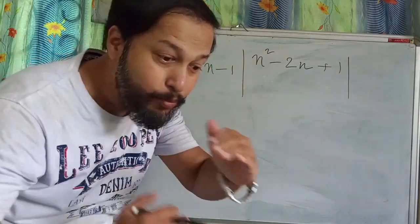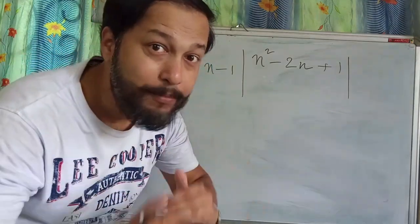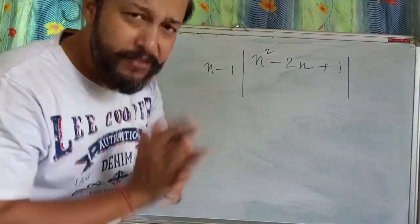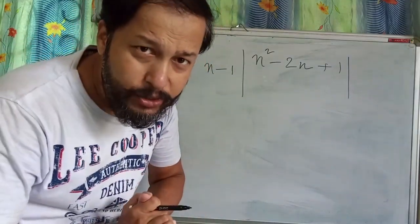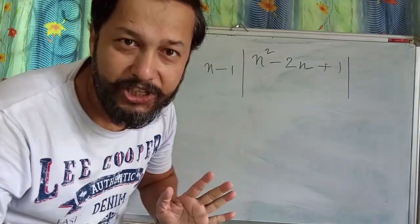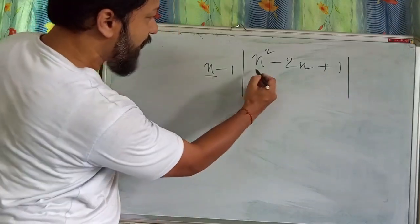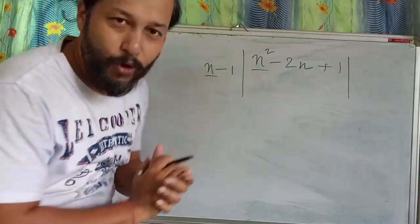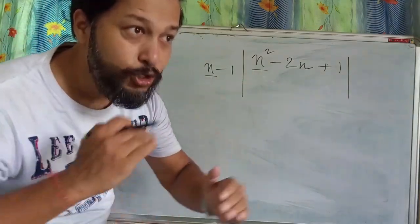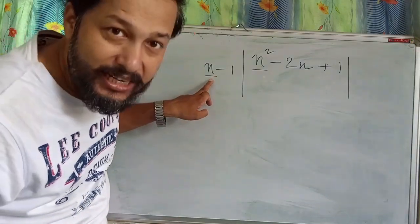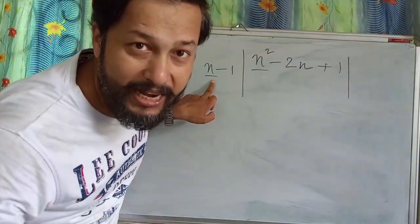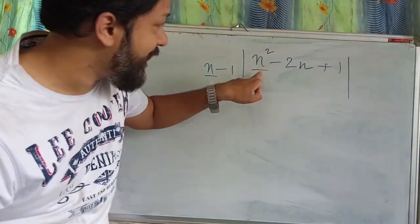Now, let's see the process — what are the steps of division. First of all, we have to look at the first term of both expressions. We will see this and this. Then we have to think: with this n, what do you have to multiply to get n²?